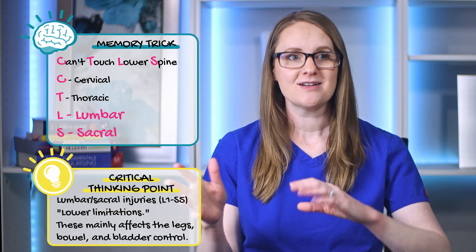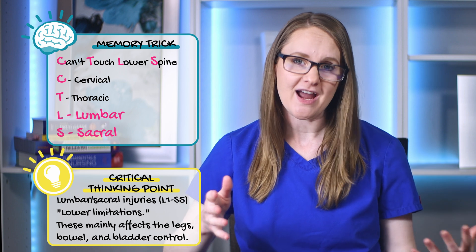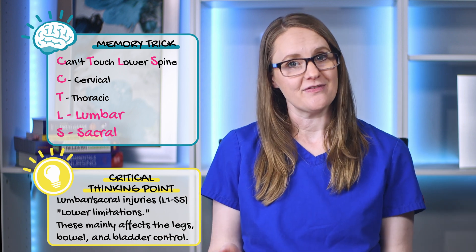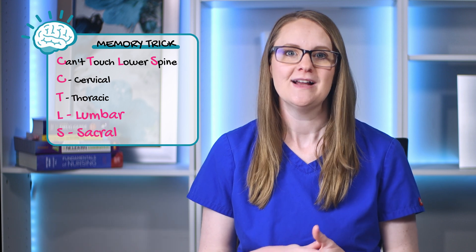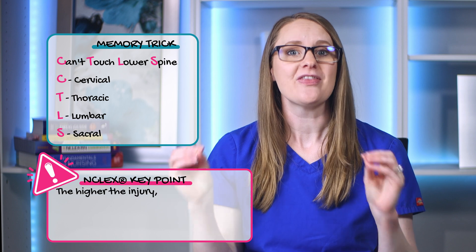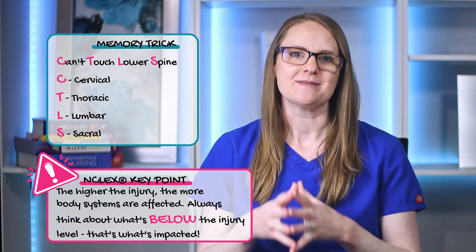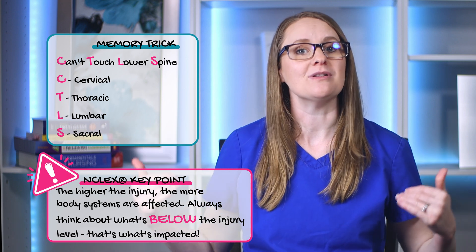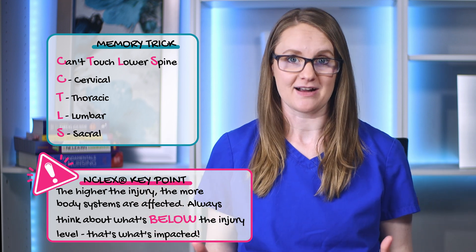For lumbar/sacral injuries, L1 through S5, think lower limitations. These mainly affect the legs, the bowel, and bladder control. And a majorly NCLEX critical thinking point: the higher the injury, the more body systems are affected. Always think about what's below the level of injury — that's what's impacted.